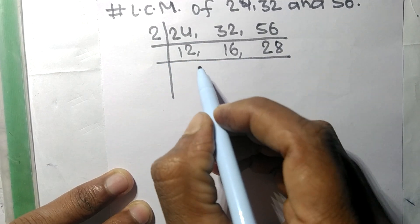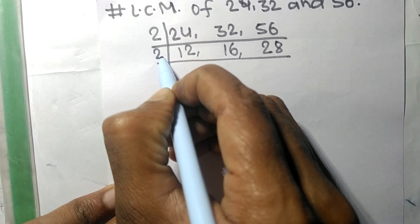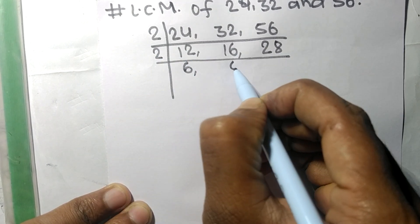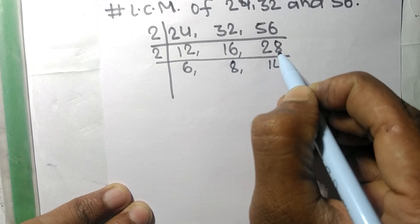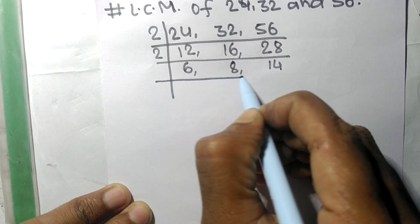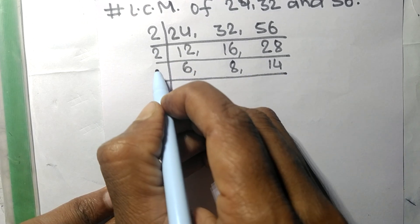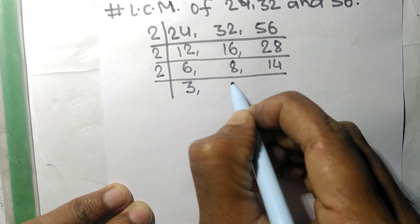Again, these all numbers are divisible by 2. 2 times 6 means 12, 2 times 8 means 16, 2 times 14 means 28. So again these all are divisible by 2. 2 times 3 means 6, 2 times 4 means 8.